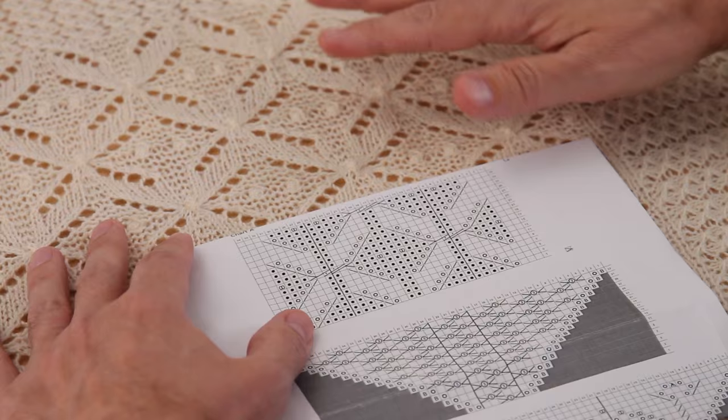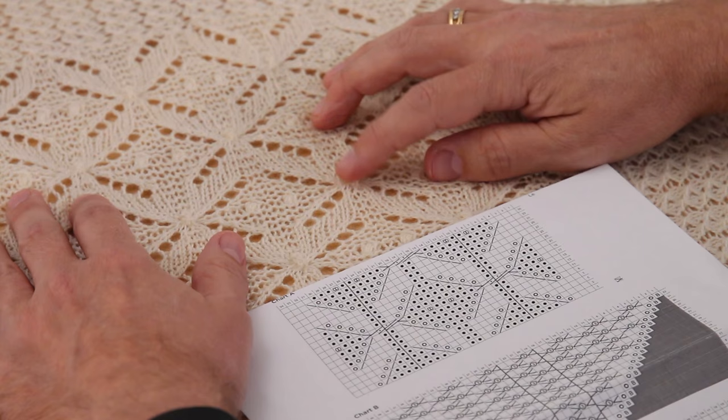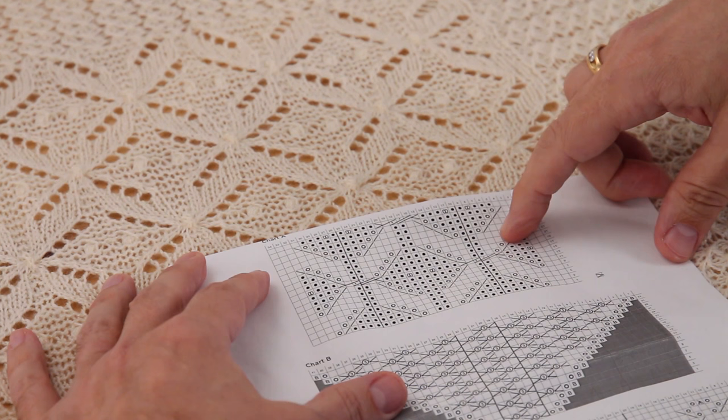So again, this is some of the charts from the Estonian wedding ring shawl that we have here. And this is the center panel right here. You can see the center panel has these really great butterfly-looking patterns with a little cable right there and some noops. It's really quite wonderful.